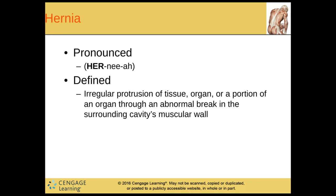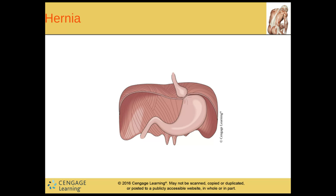Then we have a hernia. This is an irregular protrusion of tissue or a portion of an organ through an abnormal break in the surrounding cavity's muscular wall. Sometimes little babies will get an umbilical hernia, or if somebody lifts something too hard it can cause a little tear and then things start to come out through it that aren't supposed to. These are usually fixed with surgery. So this is kind of considered a hernia — the stomach starting to protrude up that way.